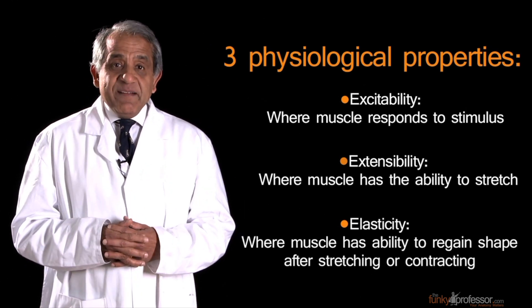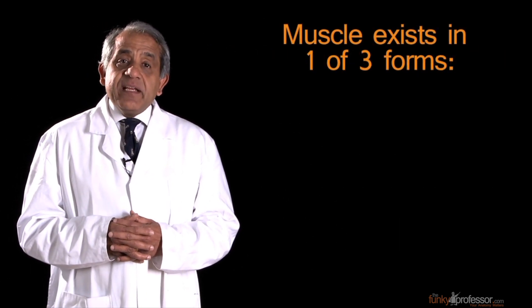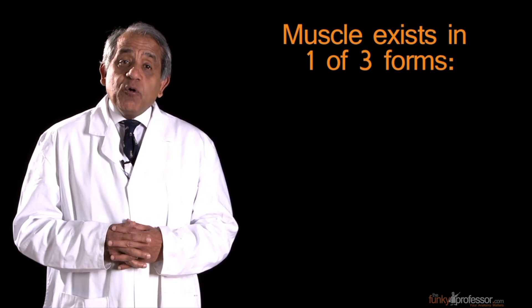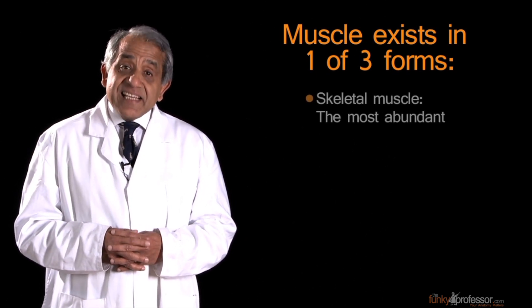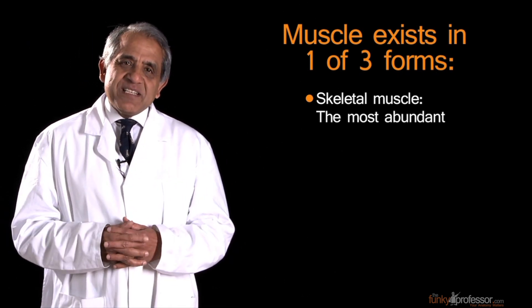Broadly speaking, muscle in the human body exists in one of three forms. Skeletal muscle, which is the most abundant variety of muscle.